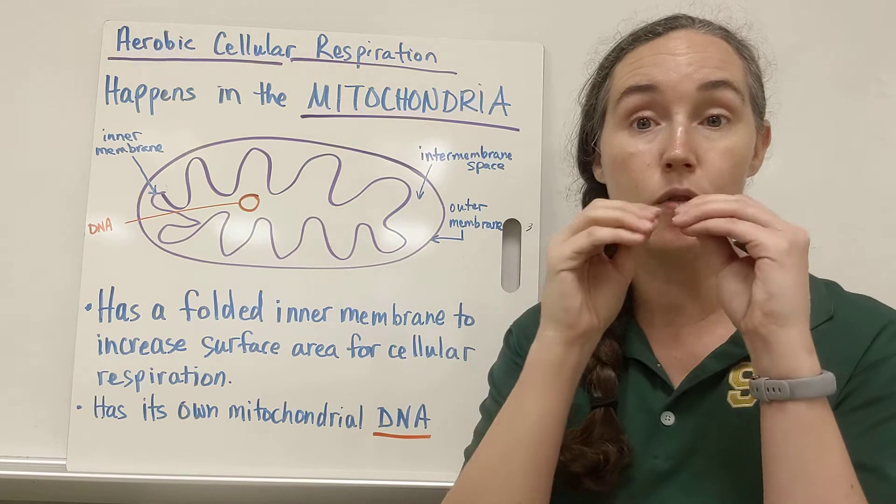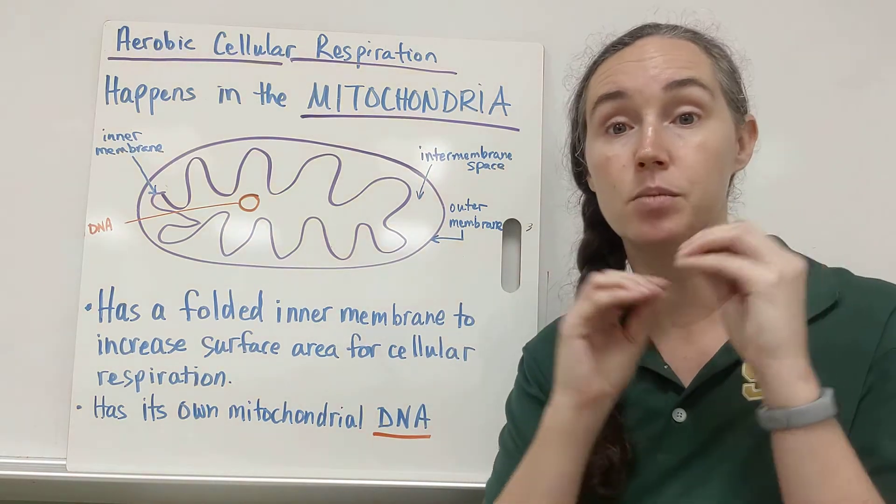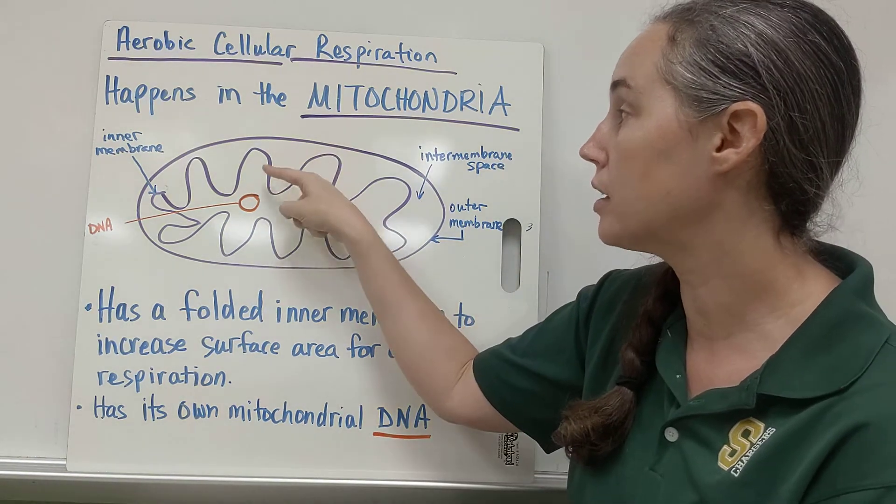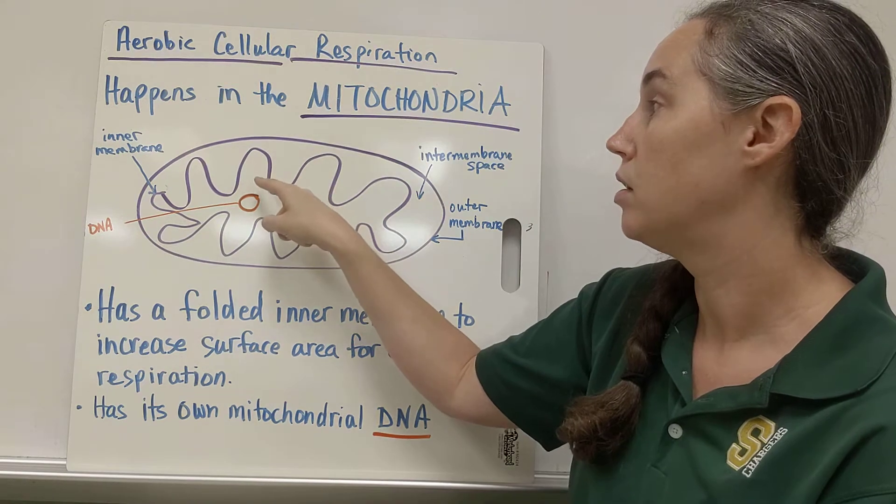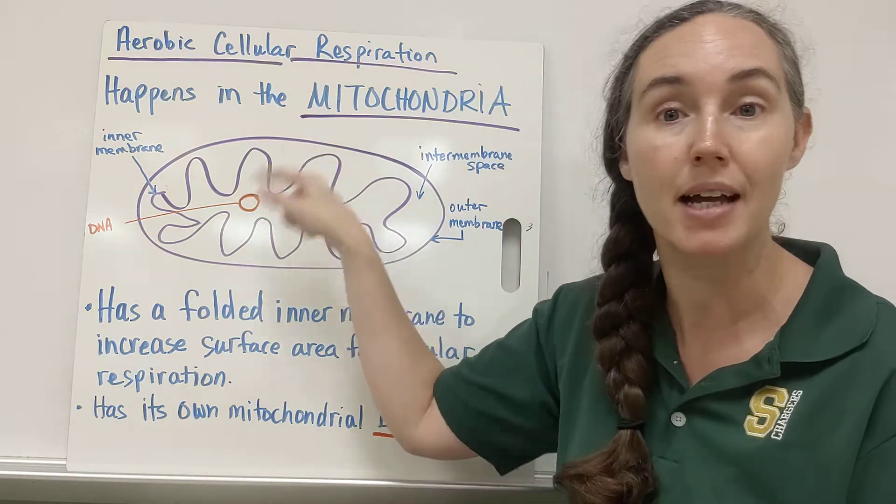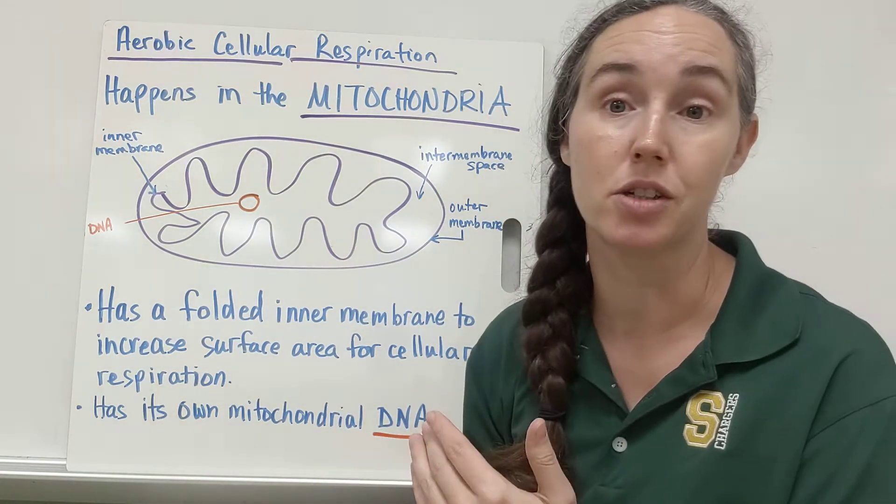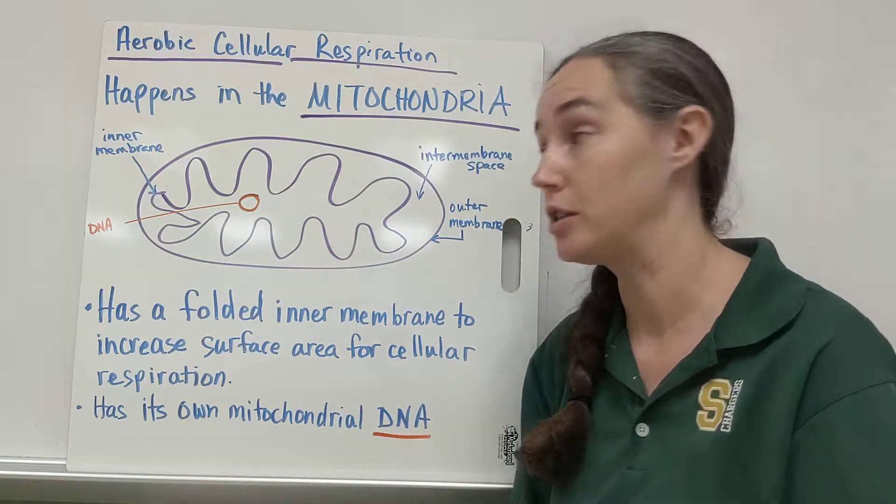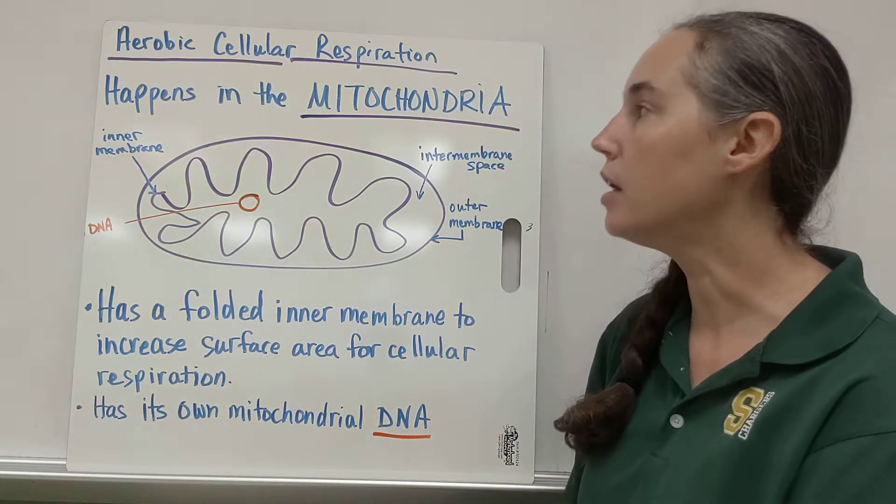That's because you need to have different atoms and molecules going across this from inside the inner membrane to that inner-membrane space and back again, over and over, for all the reactions of aerobic cellular respiration to occur.